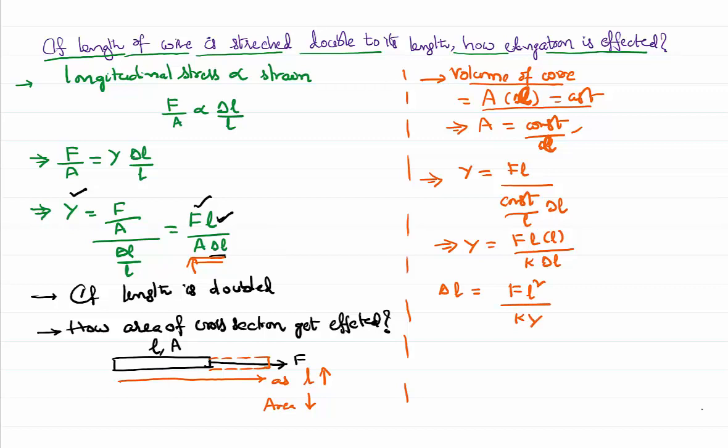Now in the given data, F is a constant, K is already constant, F is already constant, Young's modulus is constant for a given material. Then what we can write? Delta L, increase in the length of a wire, is directly proportional to L square. Now let's come to the question.